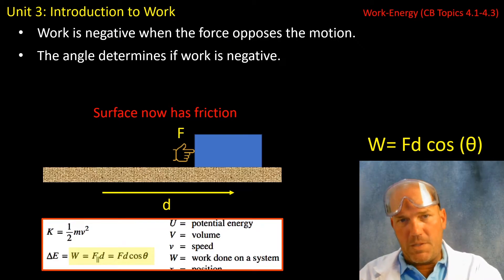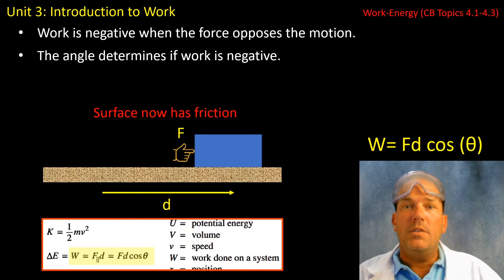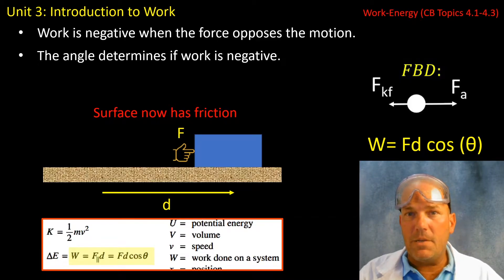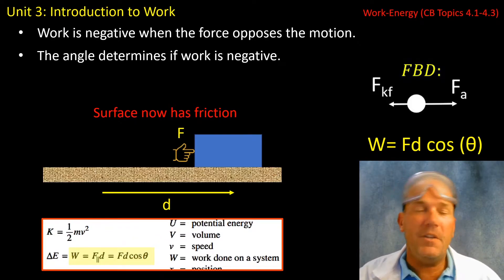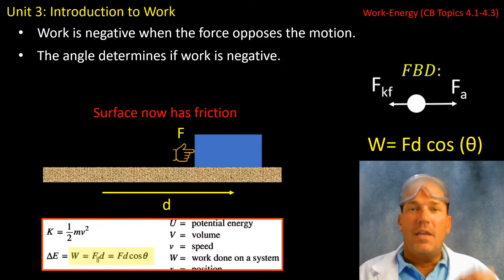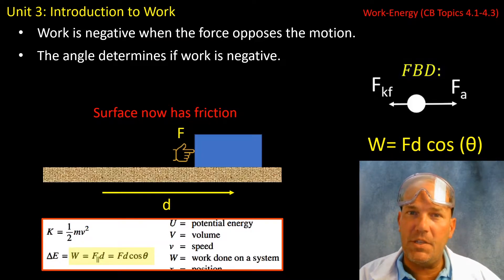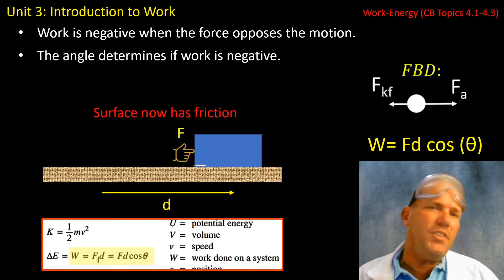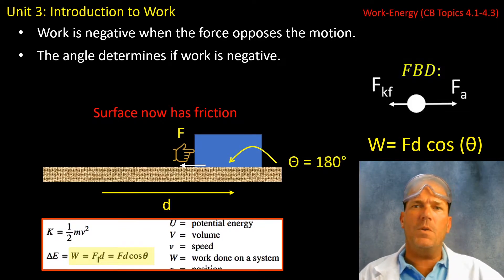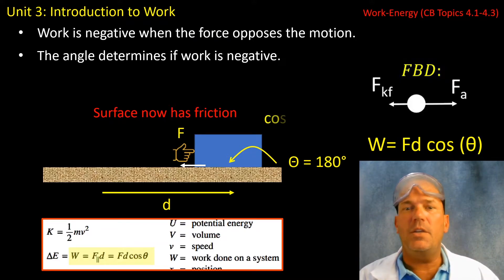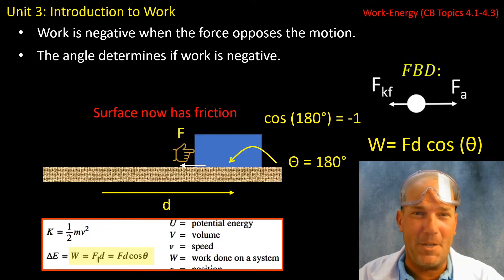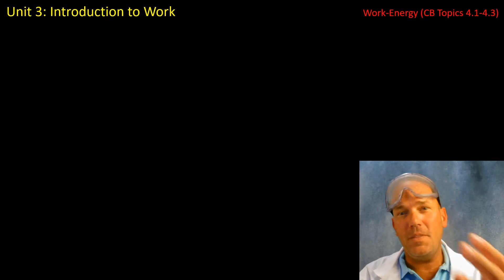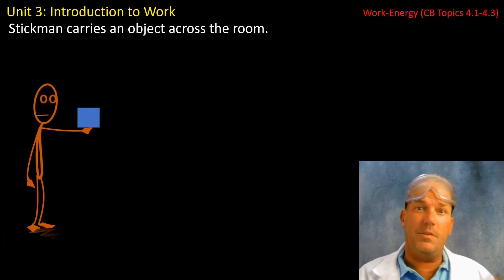Kinetic friction is the force of this surface acting to the left on this object, whereas the force applied acted to the right, resulting in a displacement to the right. So the force applied is positive work. Let's look at the angle in the free body diagram to help us understand why the force of kinetic friction is actually negative work. Displacement is to the right, but the force of kinetic friction is parallel to that displacement but in the opposite direction — it is actually 180 degrees in our cosine function in the work equation. If you take the cosine of 180 degrees, you get negative one, which gives you a negative value when you calculate work. Therefore, it's the angle that determines the sign of whether work is positive or negative.